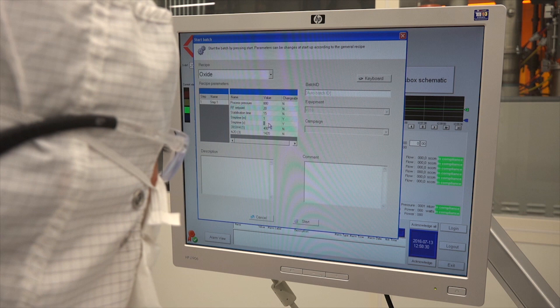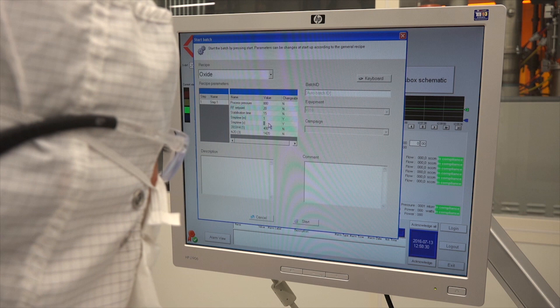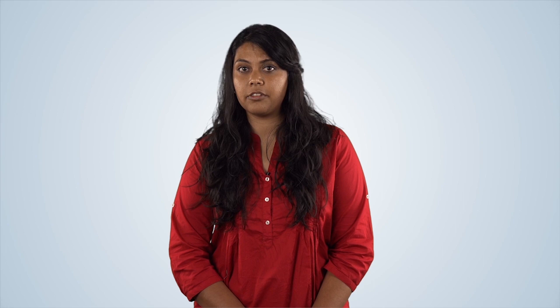We are now ready to begin the PECVD deposition by clicking Start on the computer. When we click Start, the gases begin to flow and the pressure rises to a preset value defined in the recipe. When the pressure stabilizes, the RF power is turned on, which starts the plasma.